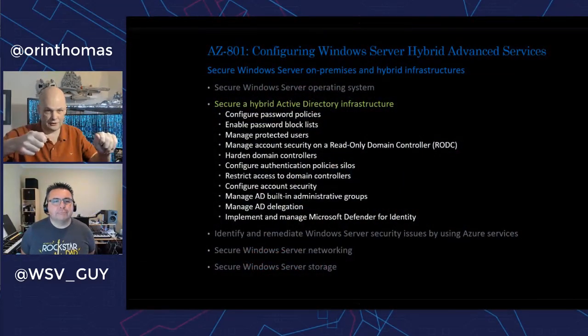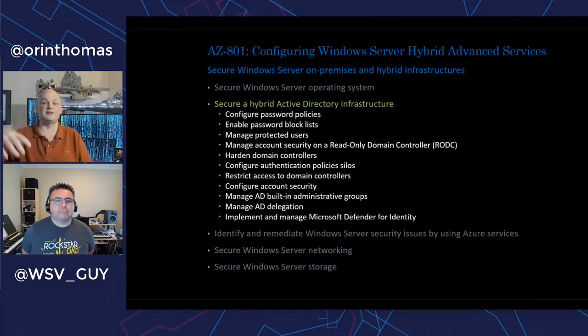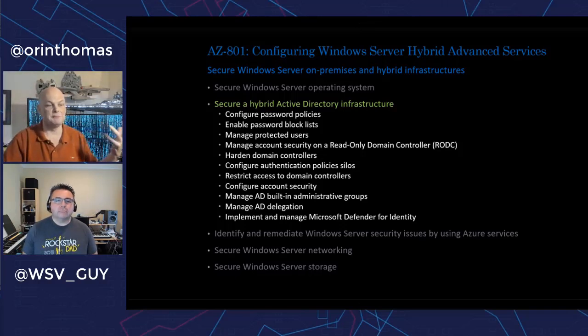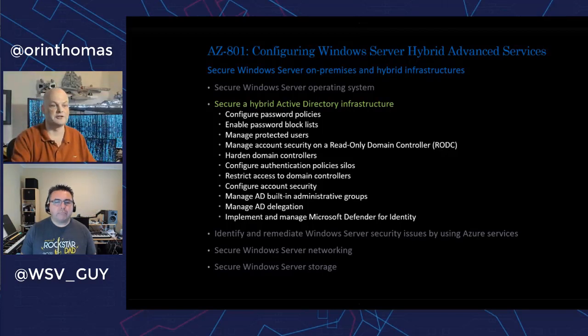If we turned on absolutely every security feature Active Directory had, a whole lot of customers are going to find that things didn't work — much of their legacy applications may just stop working. So this exam covers all of the extra knobs and dials you can turn to make Active Directory more secure. Things like disabling NTLM and shifting purely to Kerberos, understanding built-in administrative groups, delegation, and Microsoft Defender for Identity, which is a cloud service that monitors whether attacks are occurring against your domain controllers.